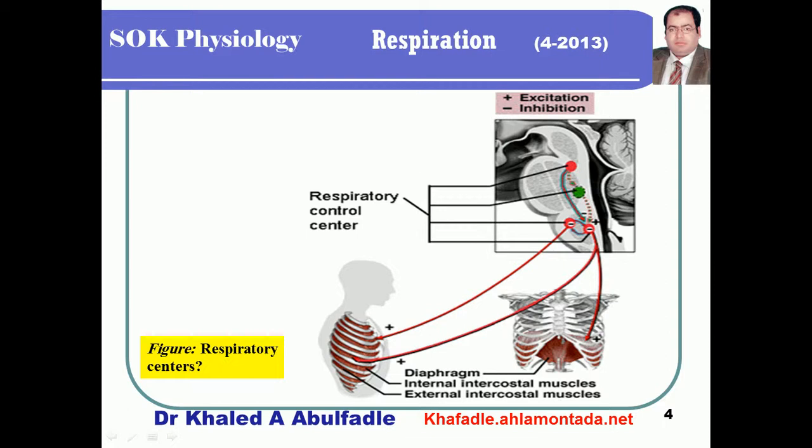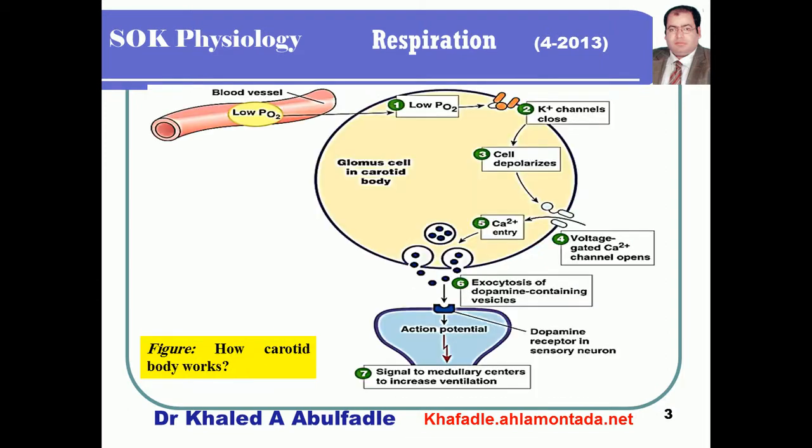Now we can discuss the ventilatory response to oxygen lack. When there is lack of oxygen in the atmosphere, it causes a decrease in oxygen tension in the arterial blood, which leads to closure of the oxygen-sensitive potassium channel. This results in potassium accumulation inside the glomus cell in the carotid body, causing cell depolarization and opening of voltage-gated calcium channels with calcium influx.